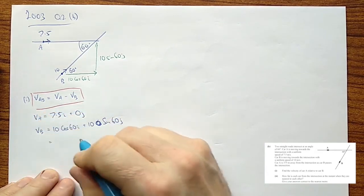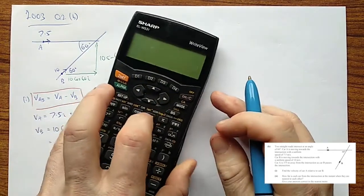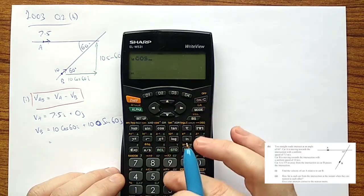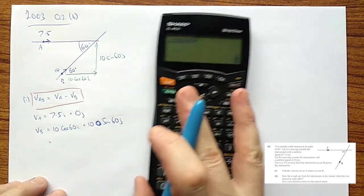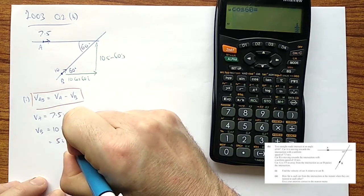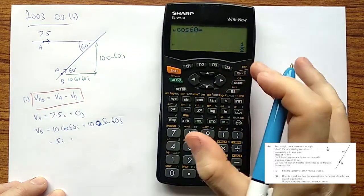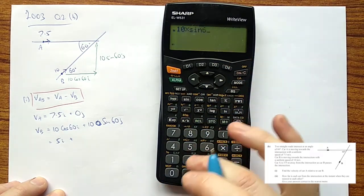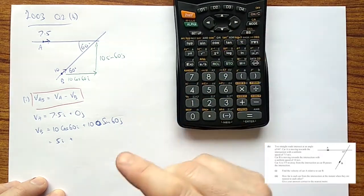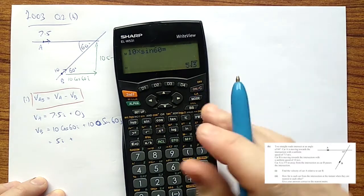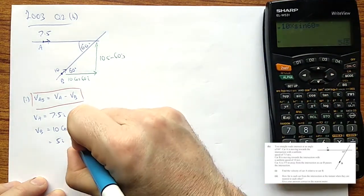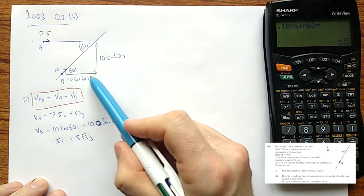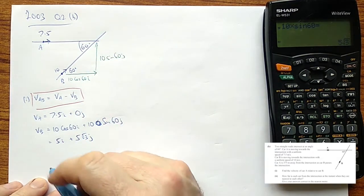We can actually tidy these up a little bit because they're not too scary. But cos 60 is, of course, a half. So, that is 5i. And sin 60 is a little more annoying. It's root 3 over 2. So, this is going to become 5 root 3. Double check our pluses and minuses. Yep, positive, positive. I've got them right here.